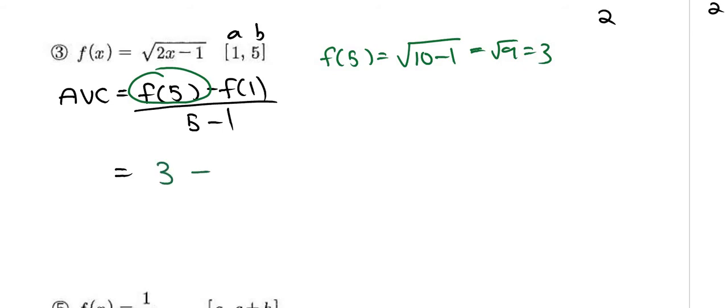So you need a 3 there minus—let's calculate f of 1 now. f of 1 is going to be the square root of 2 minus 1 which is the square root of 1 which is 1, all over 4. So this is 2 over 4, and now my average rate of change is simply 1 half.